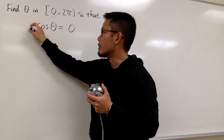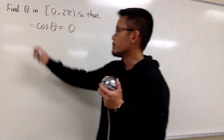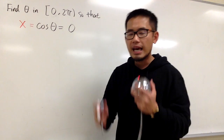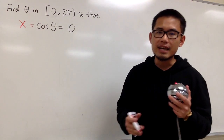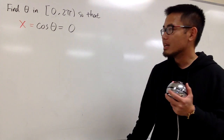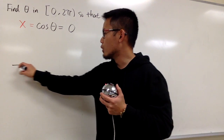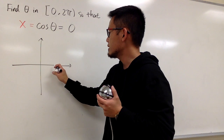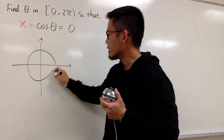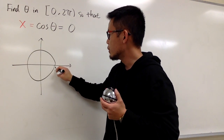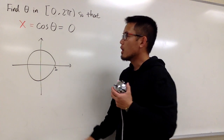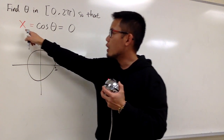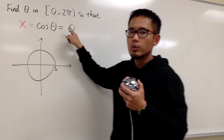On the unit circle, remember, cosine is just going to be the x value. Cosine is the x value on the unit circle, and sine is the y value on the unit circle. I'm going to draw the unit circle — the radius is equal to 1. From here, you know you are looking for x is equal to 0.